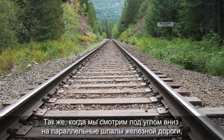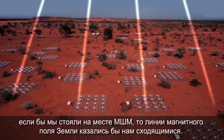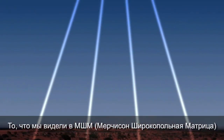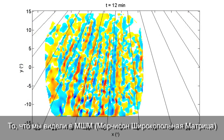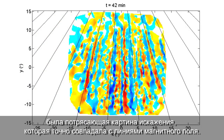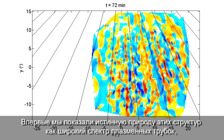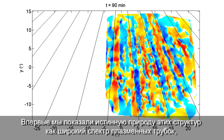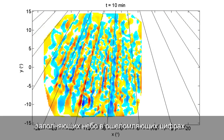Just like when we are looking at an angle down parallel train tracks, if you were standing at the site of the MWA, the Earth's magnetic field lines would appear to converge. What we saw with the MWA was a stunning distortion pattern that strongly coincided with the magnetic field lines. For the first time, we revealed the true nature of these structures as a vast array of plasma tubes, filling the sky in staggering numbers.